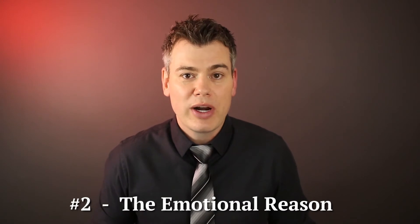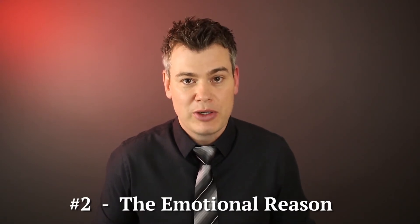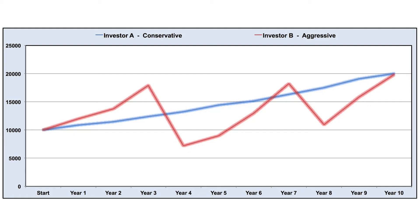Reason number two is an emotional one, and it has to do with what I call preserving emotional capital. Sometimes raw numbers don't tell the whole story. Rates of return, start value, end value, performance metrics — they can underestimate the emotions involved with investing. Let's take a hypothetical example of two investors. They both turned their $10,000 into $20,000 over the same 10-year period. So from a rate of return perspective, they're equal.